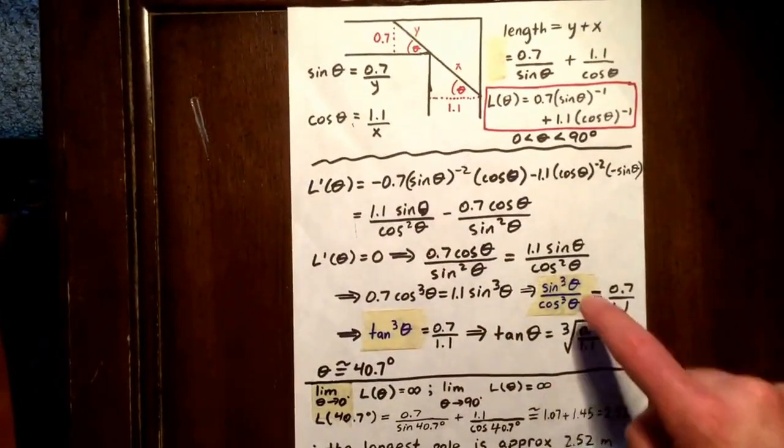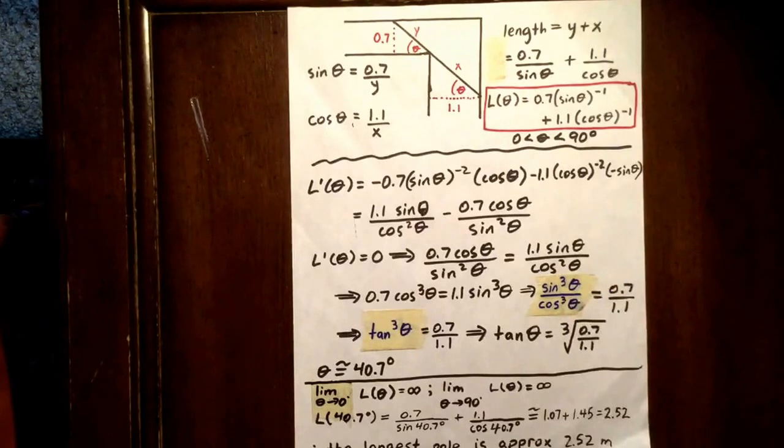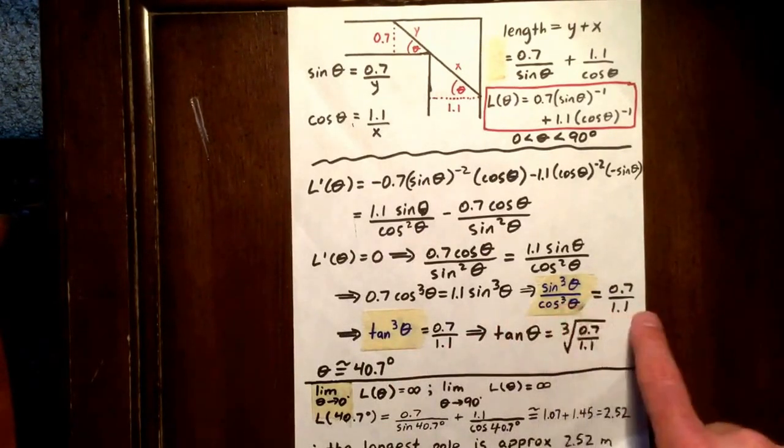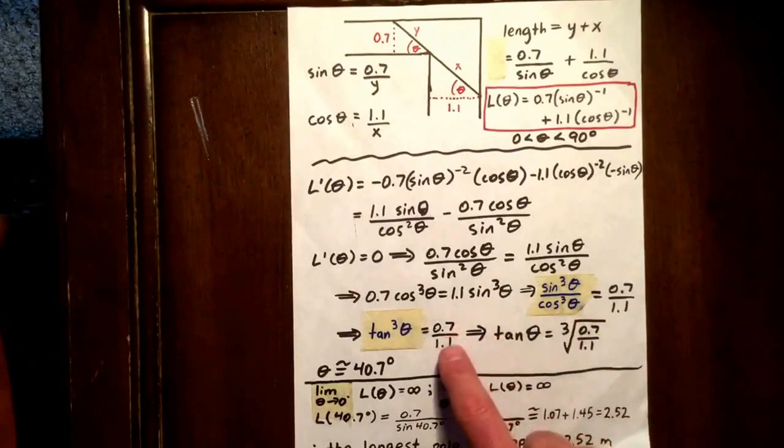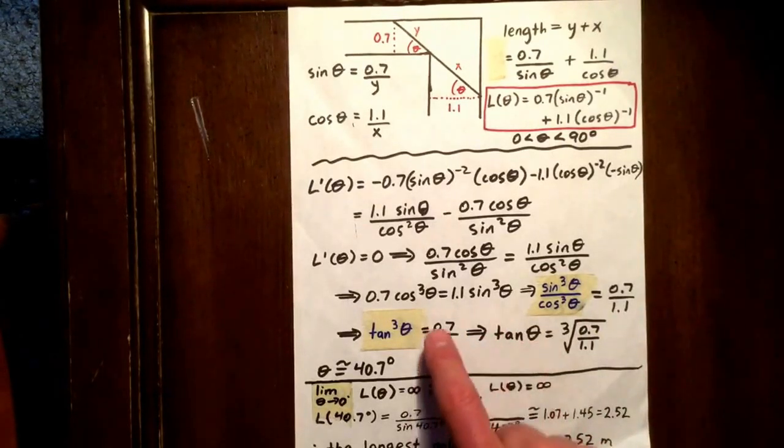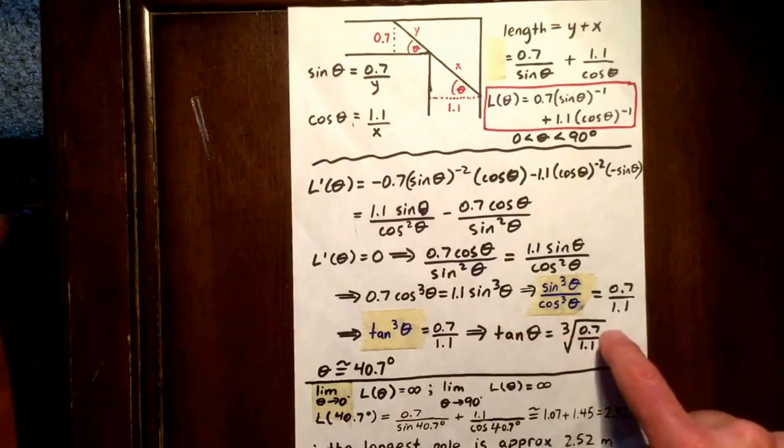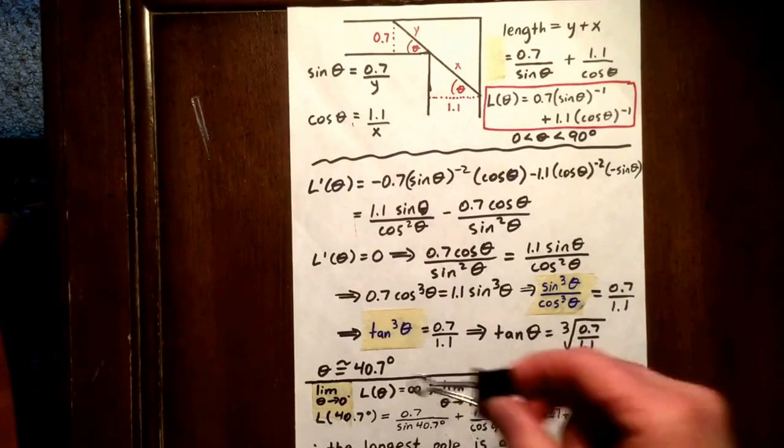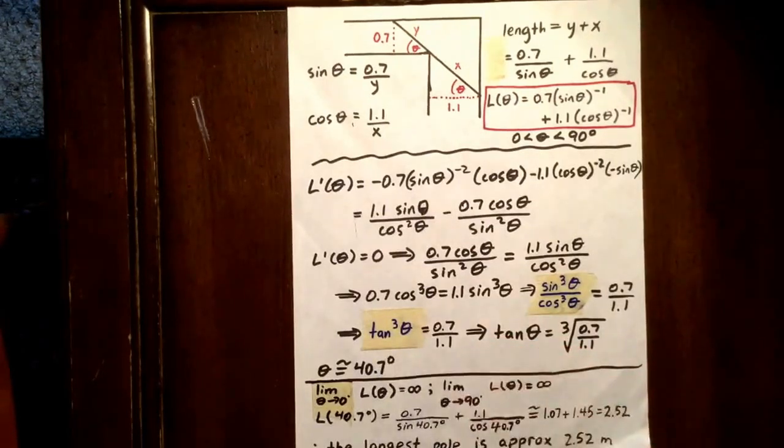Now the advantage of having sine cubed theta over cos cubed theta is we can call that tan cubed theta. And we can say tan cubed theta is 0.7 over 1.1, which means tan theta is the cubed root of this. So we just have to determine the cubed root of that value of 0.7 over 1.1, and then determine the tan inverse of that. And the answer is approximately 40.7 degrees, which is within our domain of 0 to 90.